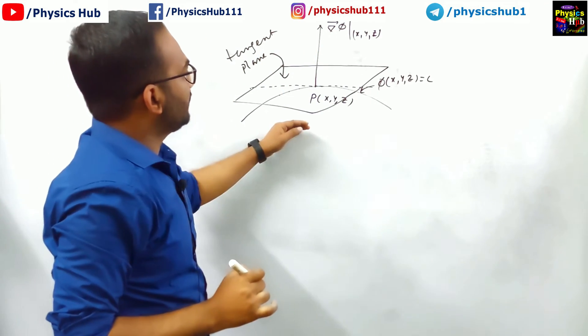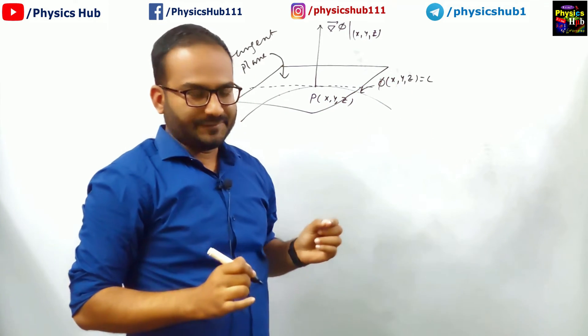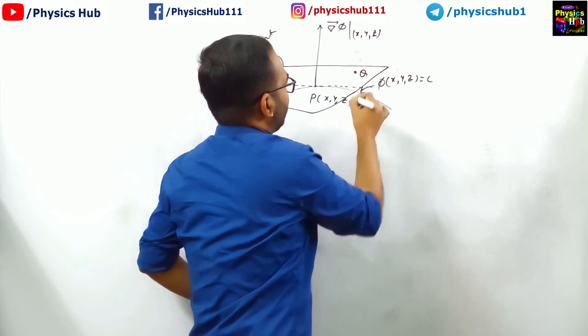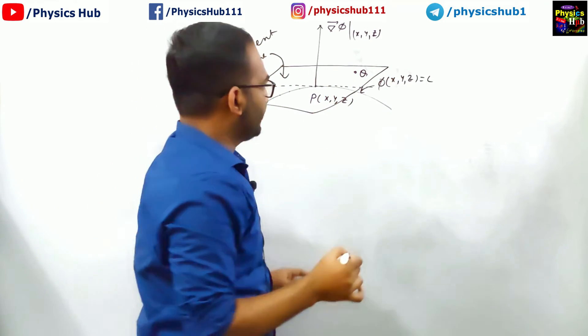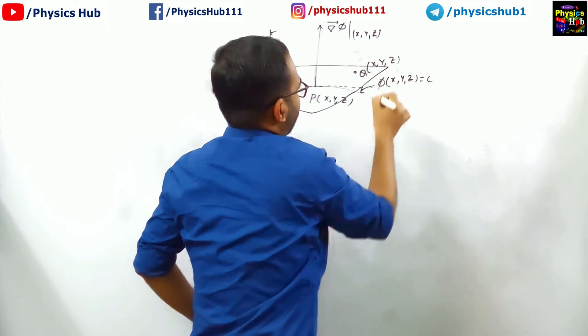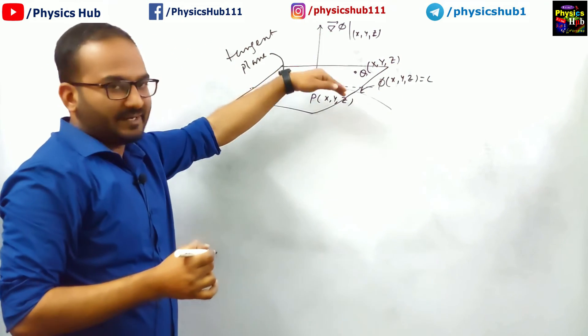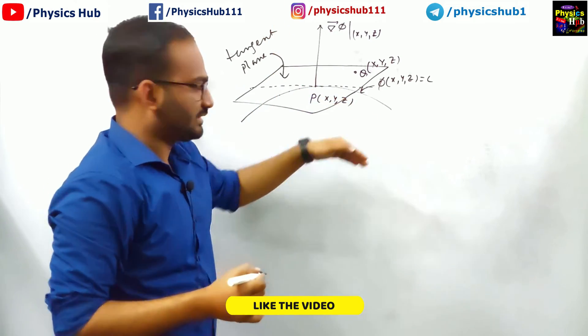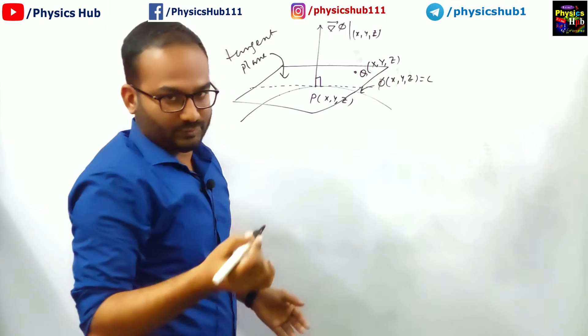To find out the equation of the tangent plane, we are taking a point on the plane. Let us say that is Q and its coordinate is given by capital X, capital Y, and capital Z. You know that grad phi is directed in a perpendicular direction to this tangent, so this angle is 90 degrees.